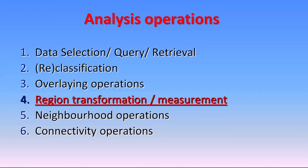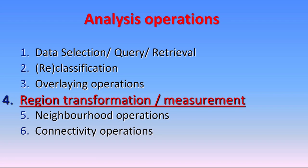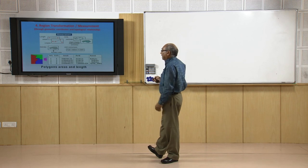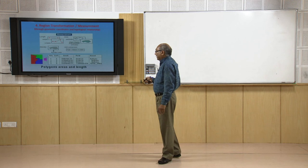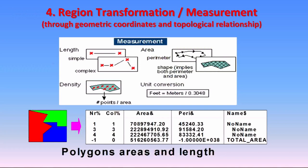Now we come to the fourth analytical operation: regional transformation or measurement. In this operation, measurements are performed and added to the attribute table. For lines, simple length is measured; for polygons, perimeter and area are calculated; for points, distances between points or distribution patterns are analyzed. Random selection and random generation of points can also be done. Calculations of area and perimeter and assignment of different attributes can all be performed in these operations.